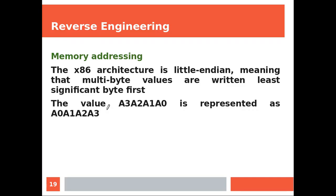And the last thing to be said is that in memory, in the x86 architecture, all the objects are written all the way around. So, A3, A2, A1, A0 is represented as A0, A1, A2, and A3.